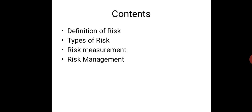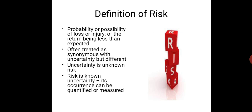In this section, we shall see about Definition of Risk, Types of Risk, Risk Measurement and Risk Management. Risk is the possibility or probability of loss or injury, or of the return being less than expected. Often treated as synonymous with uncertainty, but it is different. Uncertainty is unknown risk, but risk is known uncertainty. Its occurrence can be quantified or measured, implying a previous awareness of possible losses. Uncertainty cannot be predicted.